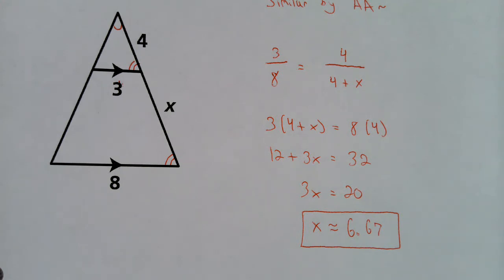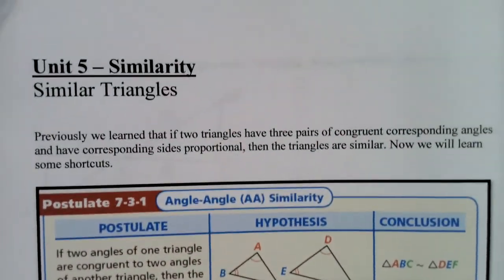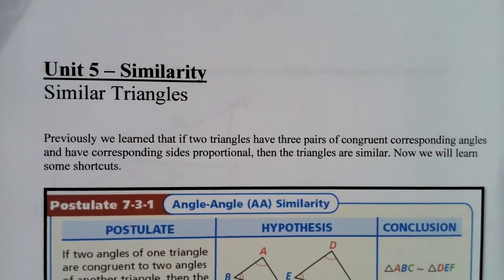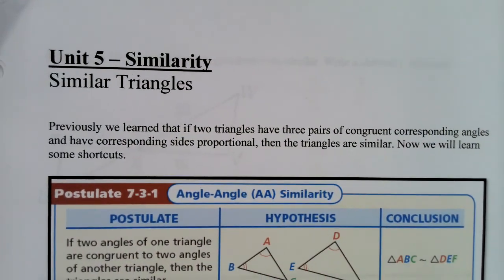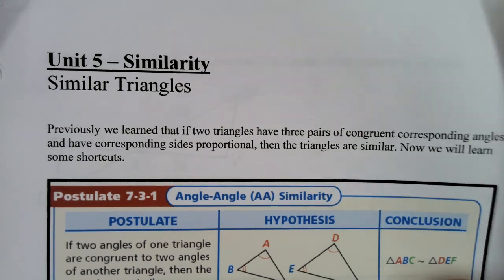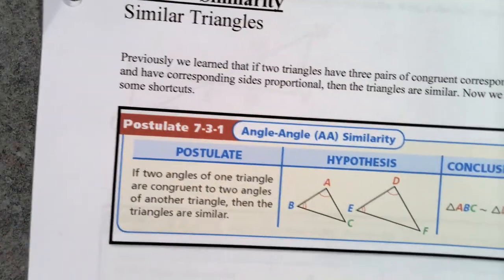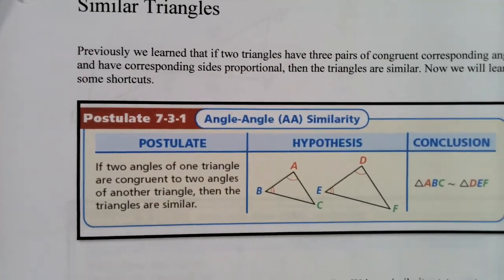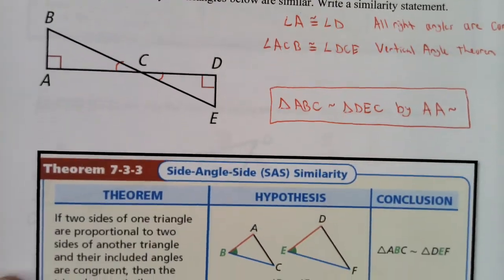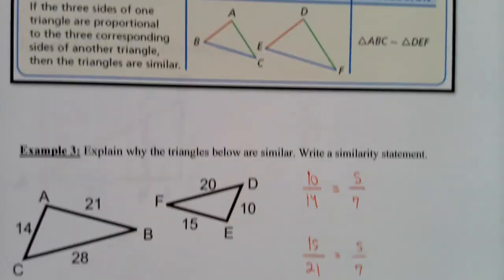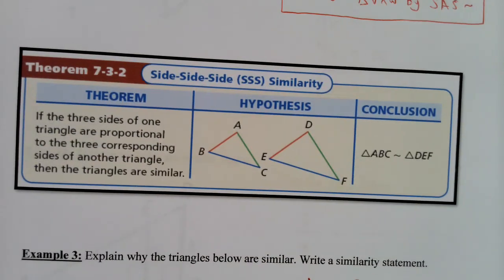x is approximately 6.67. That is the end of lesson two, called Similar Triangles. Remember, you have to know the three shortcuts: Angle-Angle Similarity, Side-Angle-Side Similarity, and Side-Side-Side Similarity.